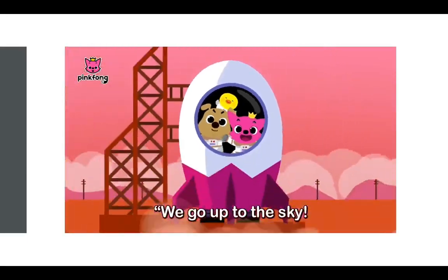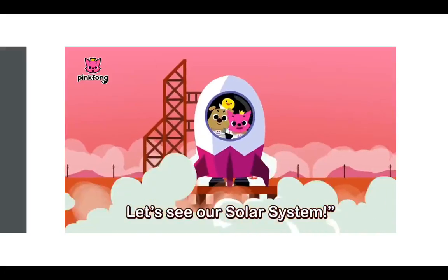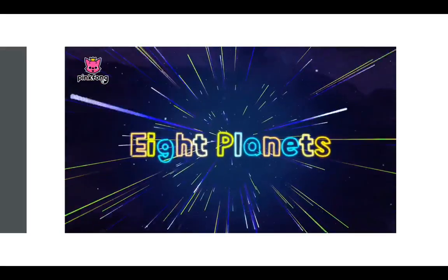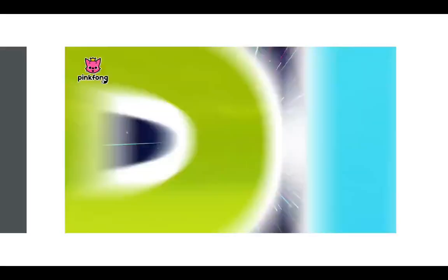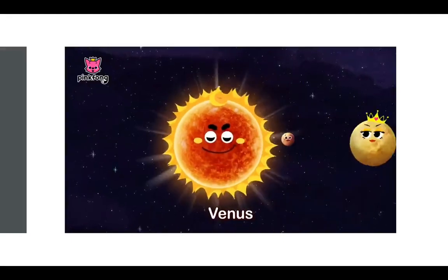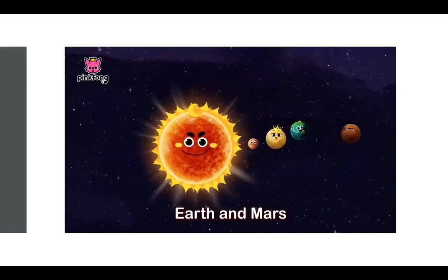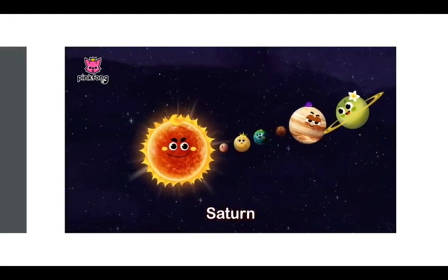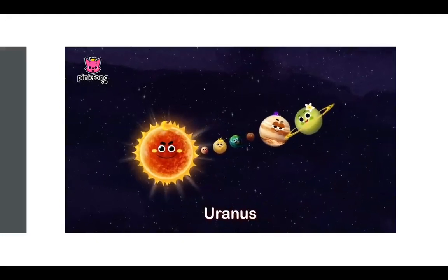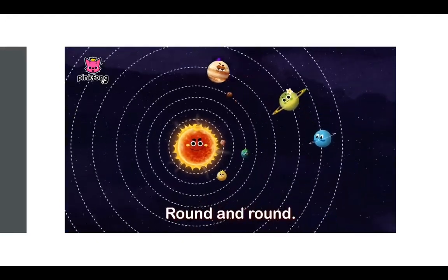We go up to the sky. Let's see our solar system. Mercury, Venus, Earth and Mars. Jupiter, Saturn. Wow, they're big. Uranus, Neptune, round and round.